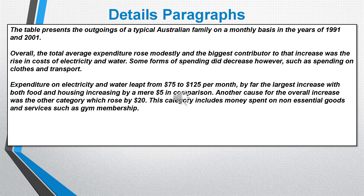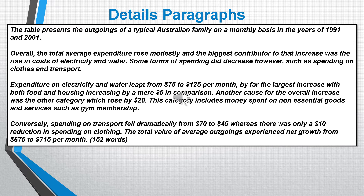The first paragraph reads: 'Expenditure on electricity and water leapt from $75 to $125 per month, by far the largest increase, with both food and housing increasing by a mere $5 in comparison. Another cause for the overall increase was the other category, which rose by $20. This category includes money spent on non-essential goods and services such as gym membership. Conversely, spending on transport fell dramatically from $70 to $45, whereas there was only a $10 reduction in spending on clothing. The total value of average outgoings experienced net growth from $675 to $715 per month.'